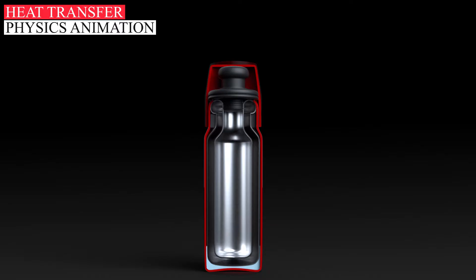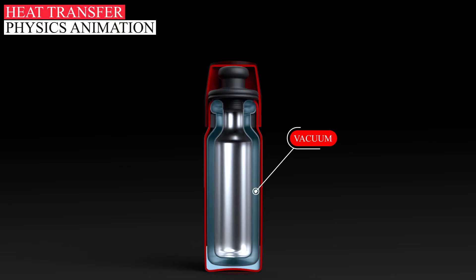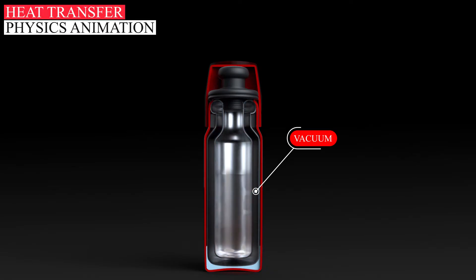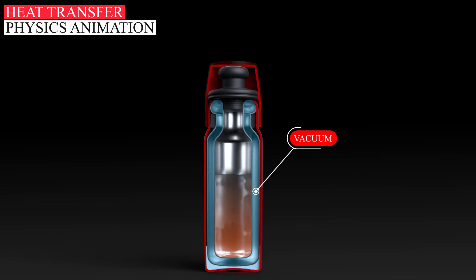In between the silvered glass walls of a thermos lies a vacuum. In the case of a hot liquid, heat transfer by convection through the vacuum is greatly restricted due to the absence of air molecules necessary to facilitate the transfer of heat.